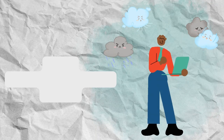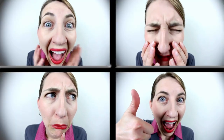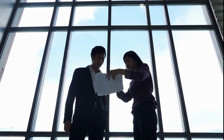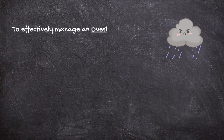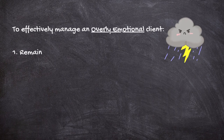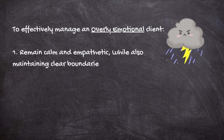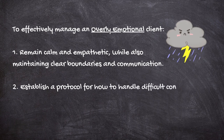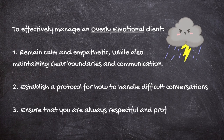The fourth type of client is the overly emotional client. These clients may be easily frustrated or upset and may struggle to communicate effectively when they are feeling emotional. To effectively manage an overly emotional client, it's important to remain calm and empathetic while also maintaining clear boundaries and communication. You may want to establish a protocol for how to handle difficult conversations and ensure that you are always respectful and professional in your interactions.